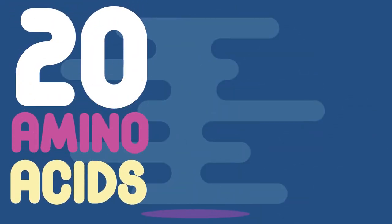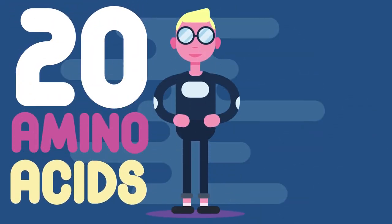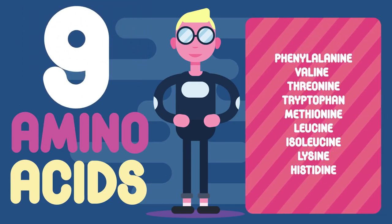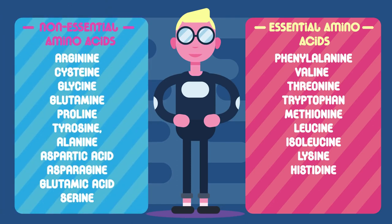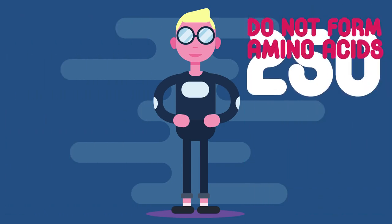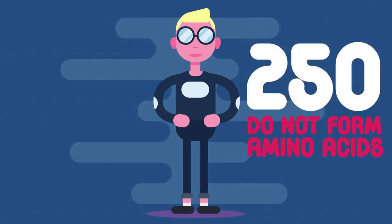There are 20 amino acids that make up our body's proteins. Nine of these we need to take in through our diet, as our body cannot manufacture them — these are known as essential amino acids. Our body can, however, manufacture non-essential amino acids. Whilst 20 amino acids build up proteins, there are actually many others that do not form proteins, possibly over 250. They may form sugars, for example.